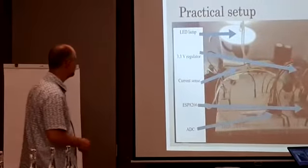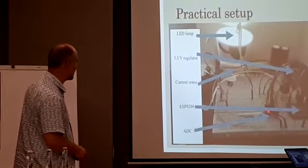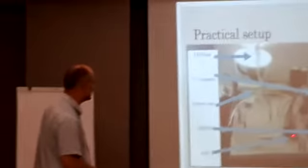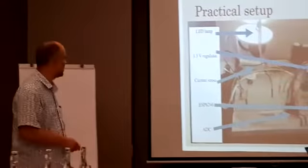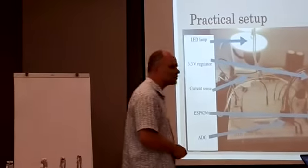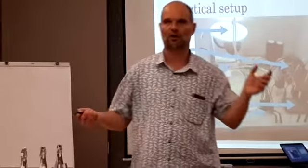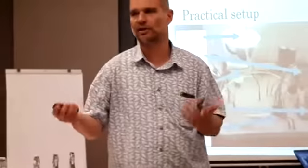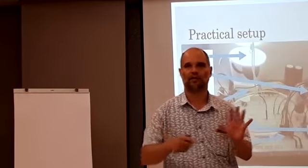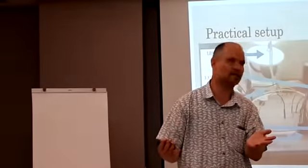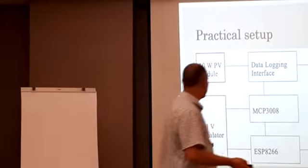In this case, we have a 3.3 volt regulator that's just to run the ESP8266 and the ADC analog-to-digital converter. The ADC is there to create some extra analog inputs for us. For current sensing, we're doing it the old-fashioned way using inline resistors—just the voltage drop across a 4 ohm resistor. We can determine the current by measuring voltages, then doing calculations in the ESP to get current and power.